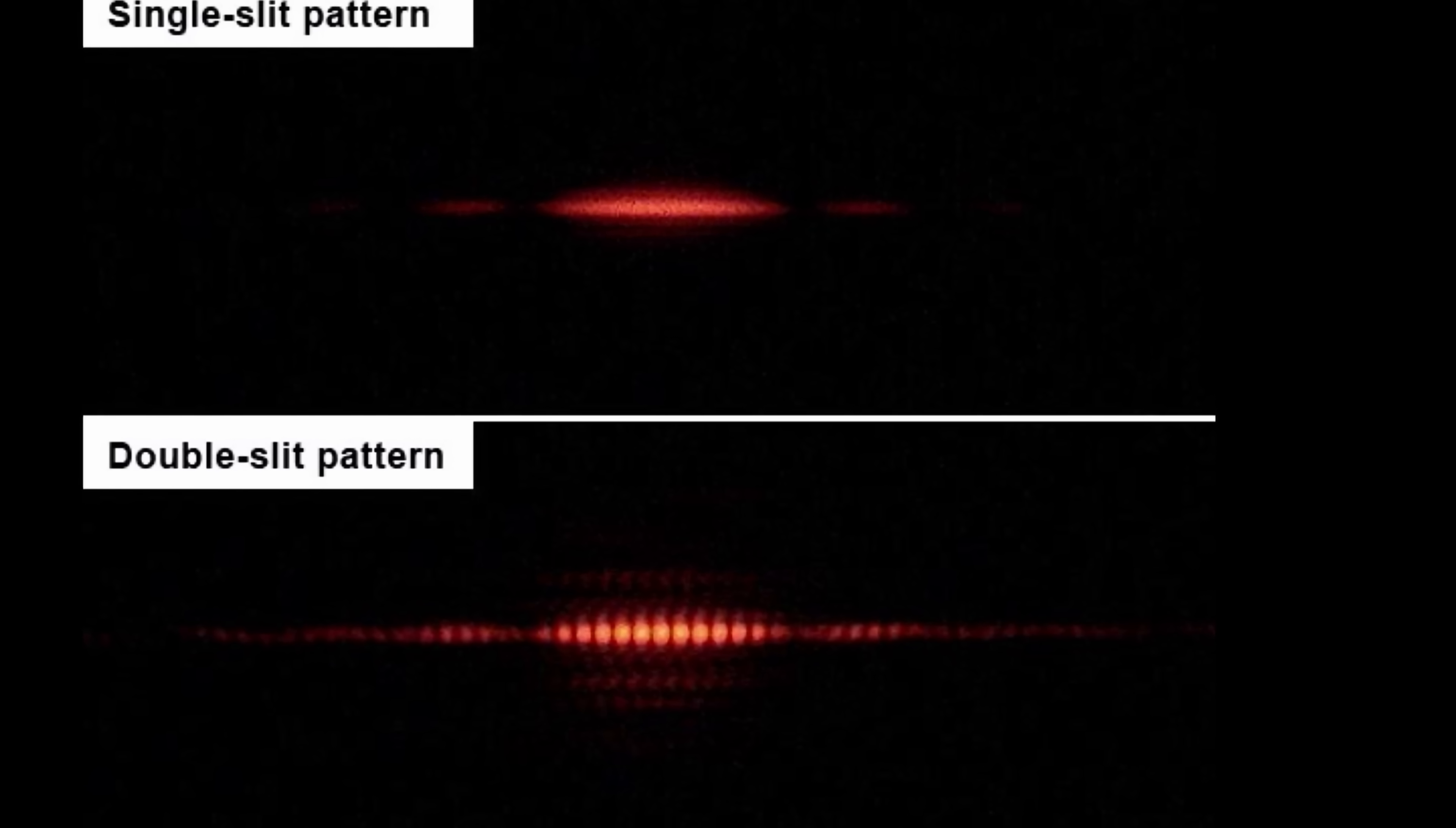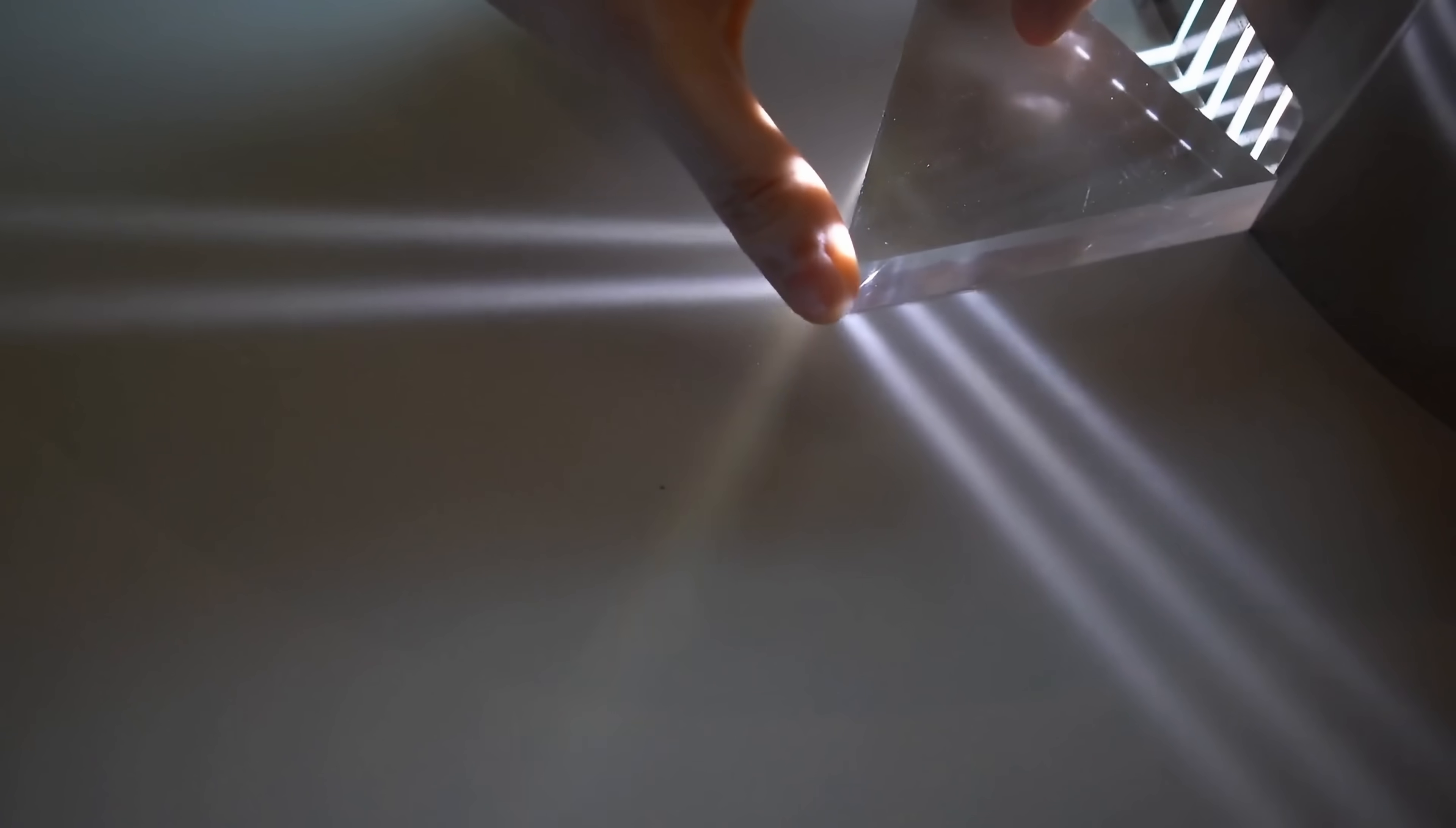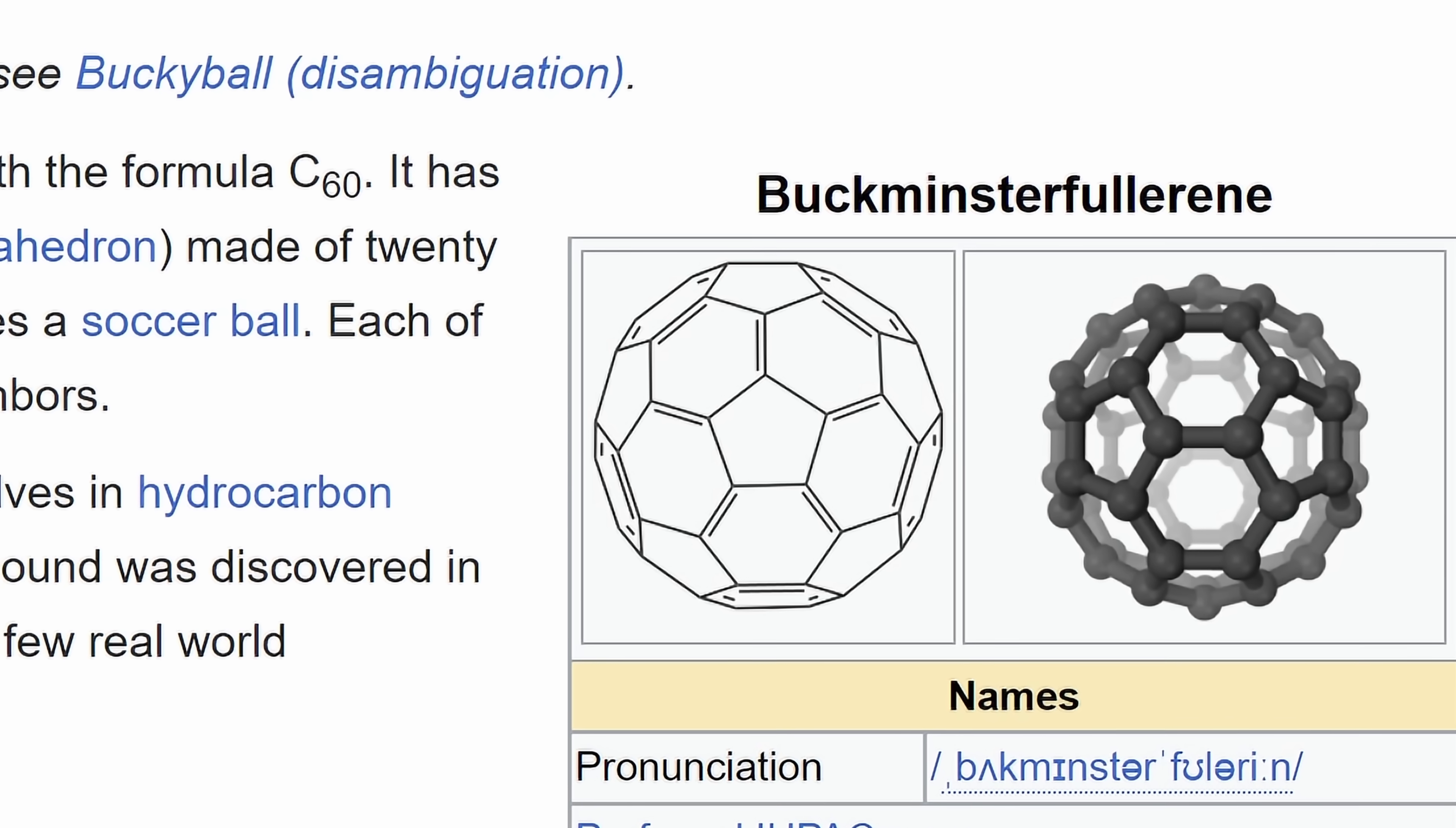Because it turns out these patterns are also produced by pretty much anything involving any kind of a particle. It does not have to be light. You can also produce these by for example using electrons, using atoms or even using certain molecules. As a matter of fact one of the larger single atom molecules out there, buckminsterfullerene also known as a buckyball but basically contains 60 different carbons, was shown to produce a very similar pattern as far back as 1999.